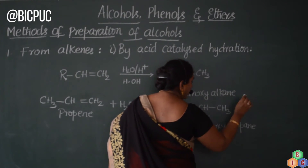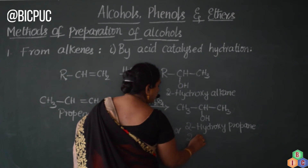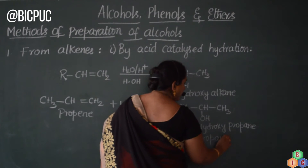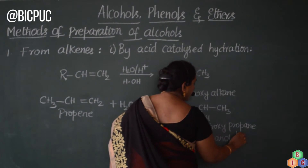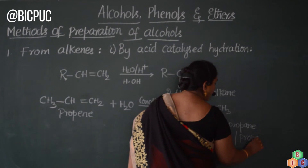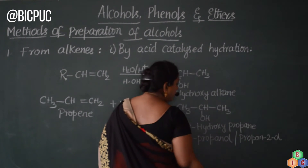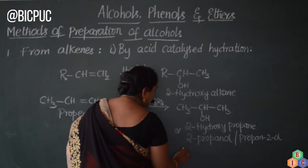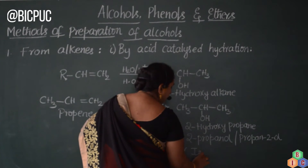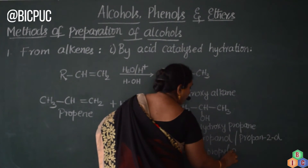The IUPAC name is 2-hydroxypropane, or we can also call it 2-propanol or propan-2-ol — all of these are correct IUPAC names. The trivial nomenclature is isopropyl alcohol.